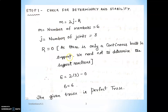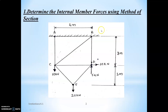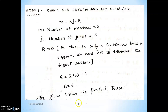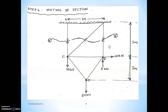In the first step, we are going to check whether the given truss is determinate or not — whether the given truss is a perfect truss. This method we already discussed using m equal to 2j minus r. We are validating whether the given truss is perfect or not.